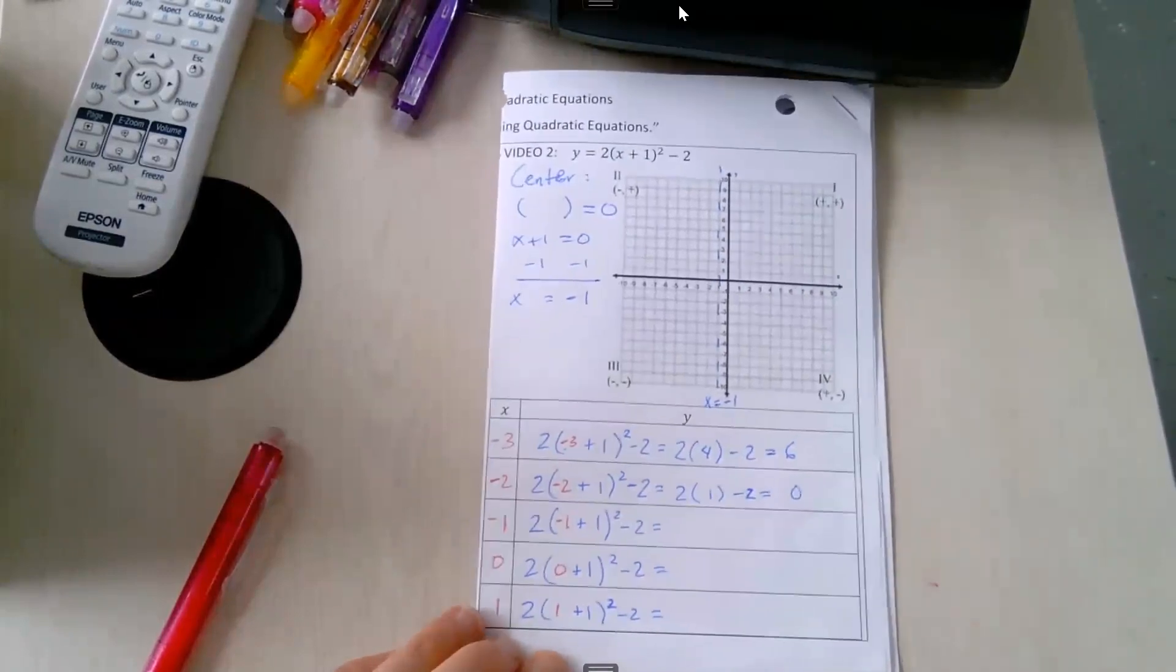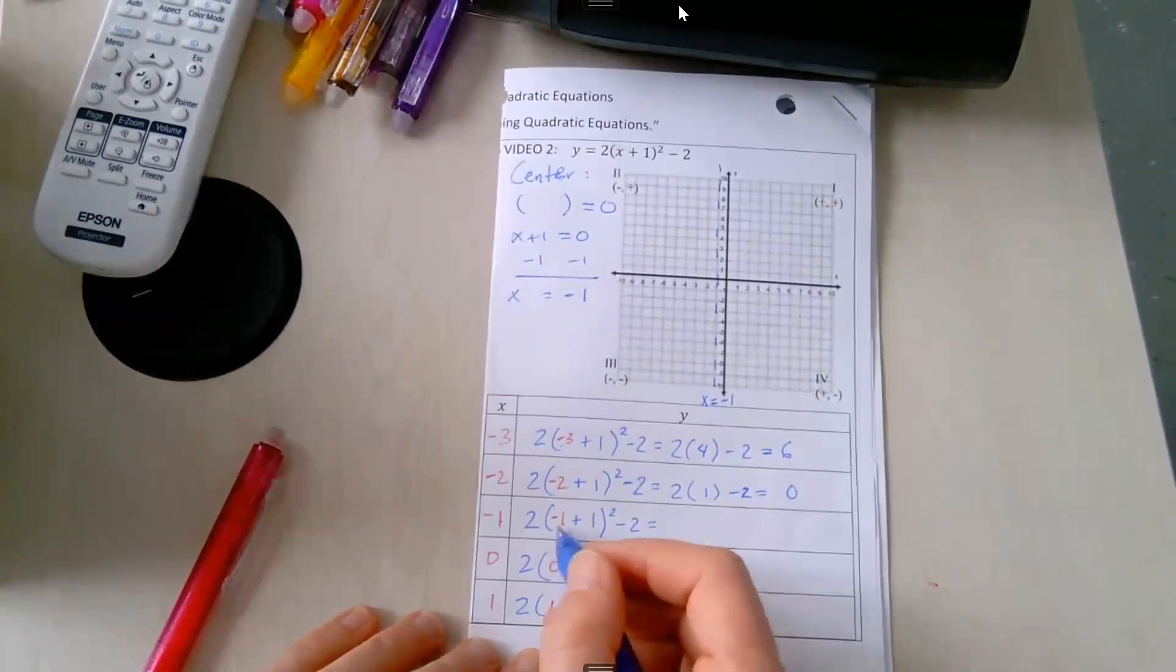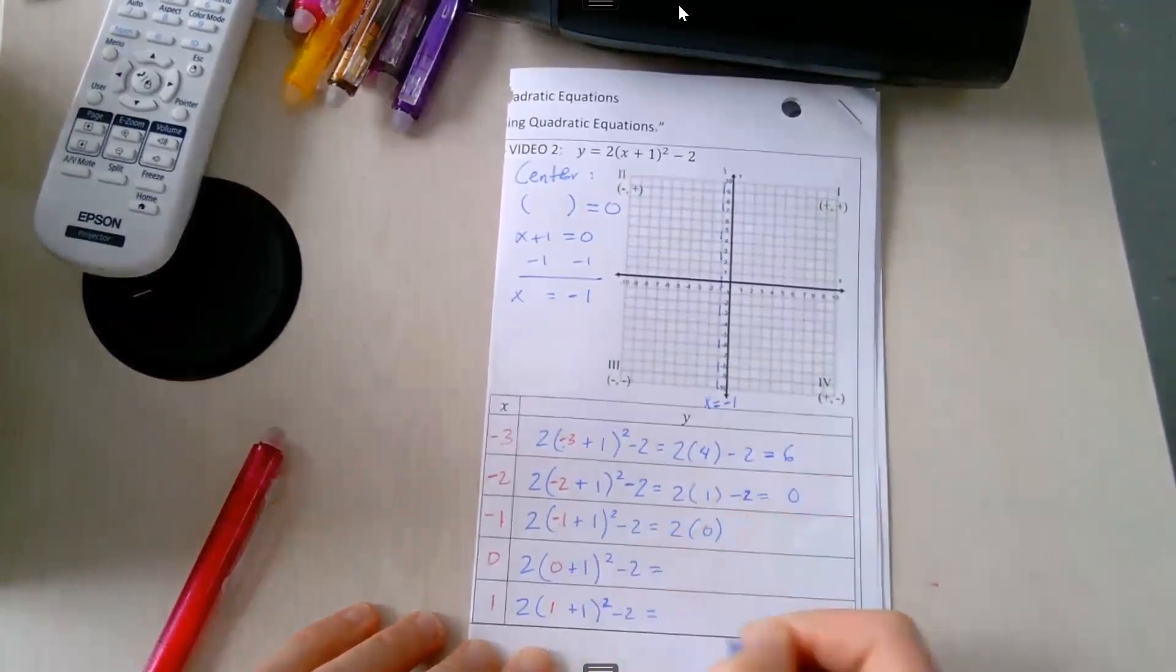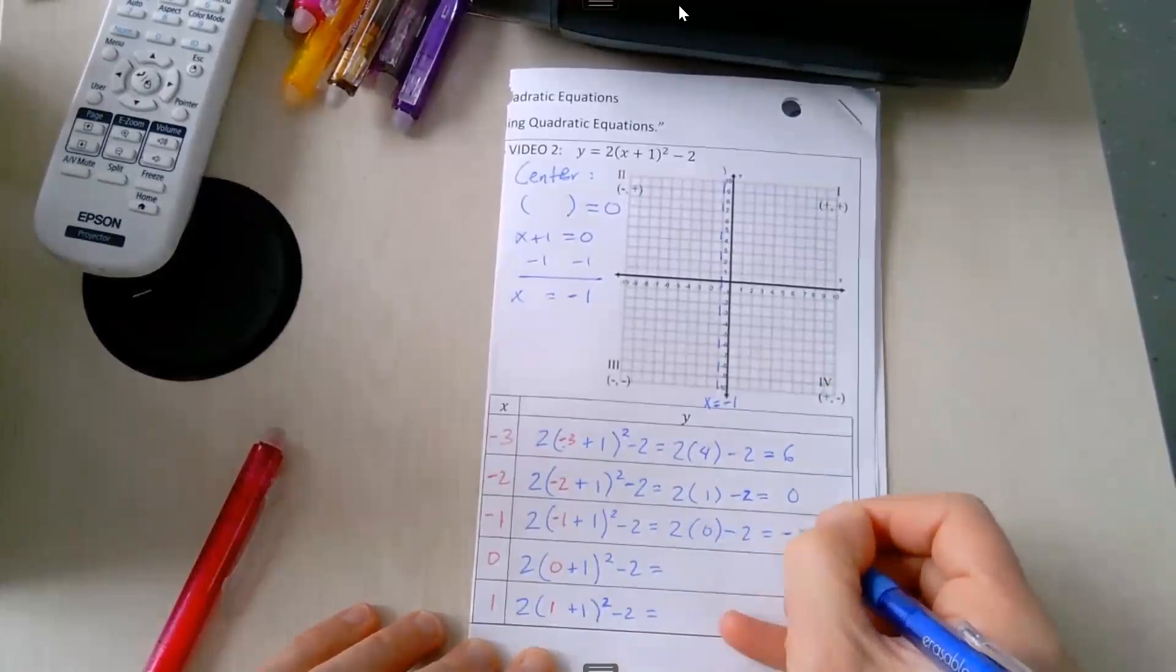And go again. Negative 1 plus 1 is 0. 0 to the second power is 0 times 0. So that's 0. We have 2 times 0, then minus 2. 2 times 0 is 0. 0 minus 2 is negative 2.